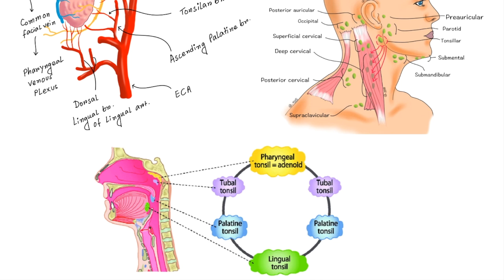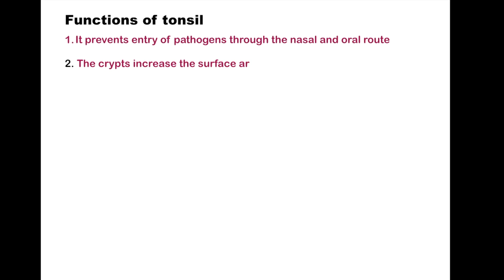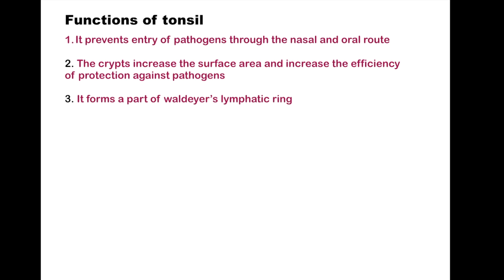The palatal tonsil is part of Waldeyer's ring, which is a circumpharyngeal ring of mucosa-associated lymphoid tissue that surrounds the openings into the digestive tract and respiratory tracts. It is made up anteriorly and inferiorly by the lingual tonsils, laterally by the palatine and tubal tonsils, and posteriorly and superiorly by the pharyngeal tonsils and smaller collections of lymphoid tissue in the intertonsillar intervals. Functions of the tonsil include preventing the entry of pathogens through the nasal and oral routes; the crypts increase surface area and improve efficiency of protection against pathogens.